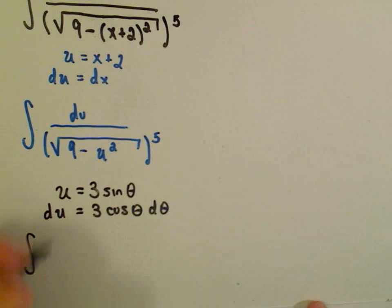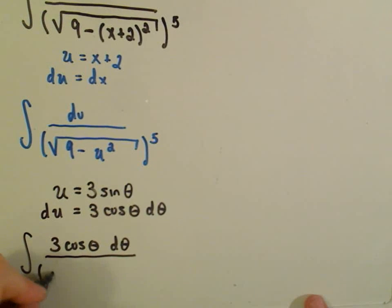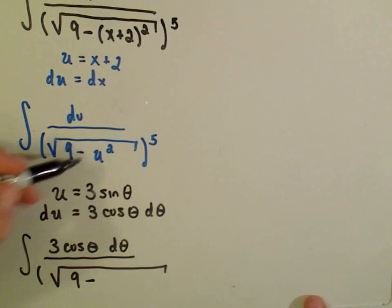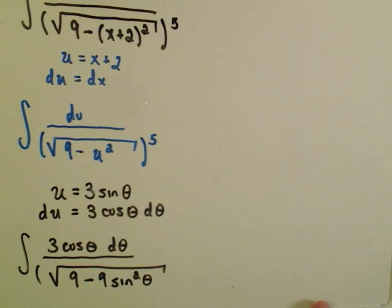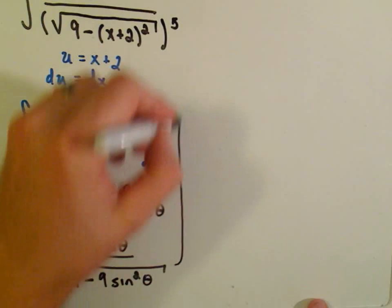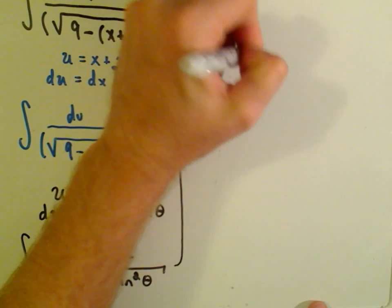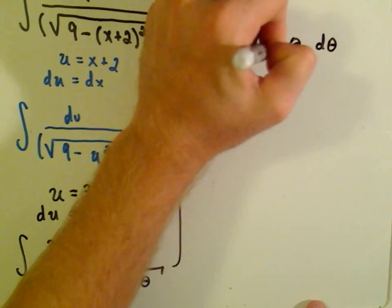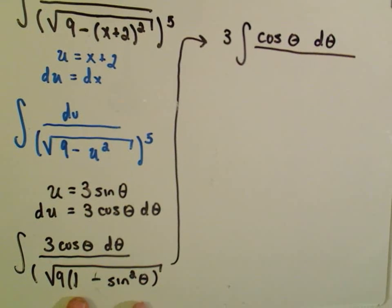Alright, so when we go to integrate, it says again du on top. So I'll replace my du with my 3 cosine theta d theta. And then underneath the square root, I've got 9 minus u quantity squared. But if I square u, I'll get 9 sine squared theta. So now I'm just going to simplify. I'll pull the 3 out front. I still have my cosine theta d theta left over. Notice you could factor a 9 out of the denominator. You could make this 9 times 1 minus sine squared theta.